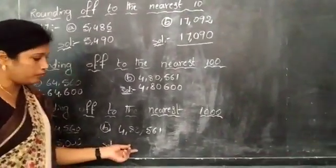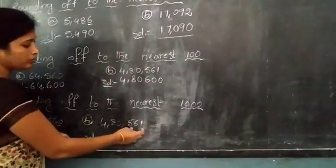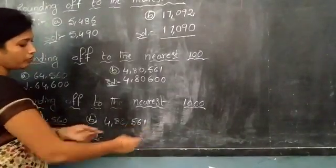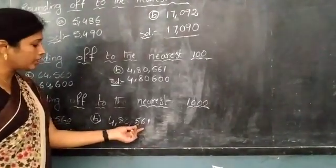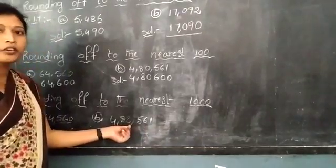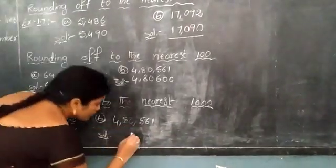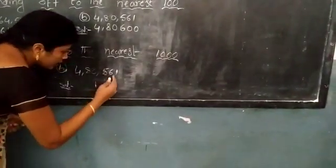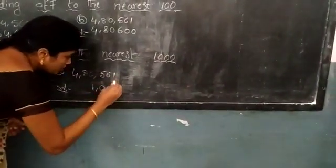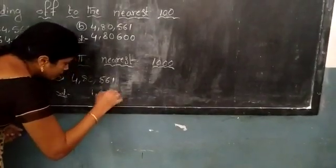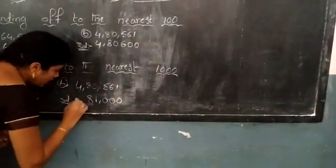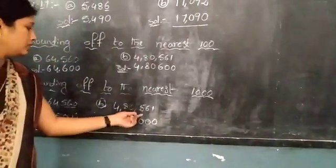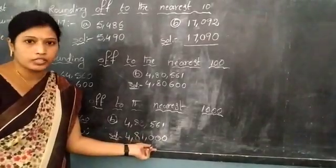See this next example. Here also observe the last 3 digits. This value is greater than 500. So we increase the thousands value by 1. The 100's, 10's, and 1's places are all replaced with 0, and the other digits are retained as they are. The rounded number is 4,81,000.